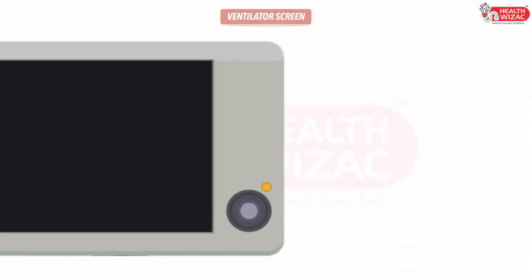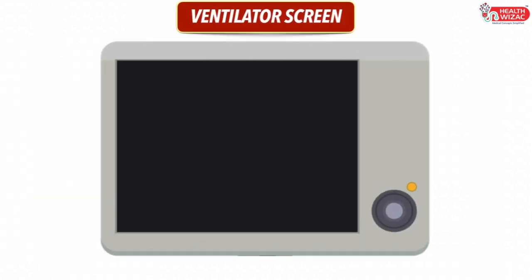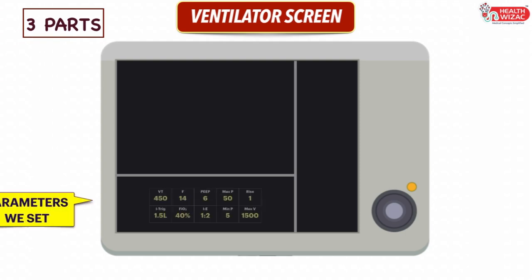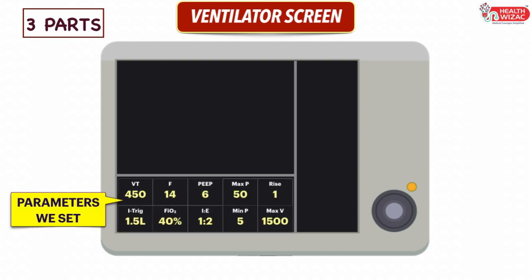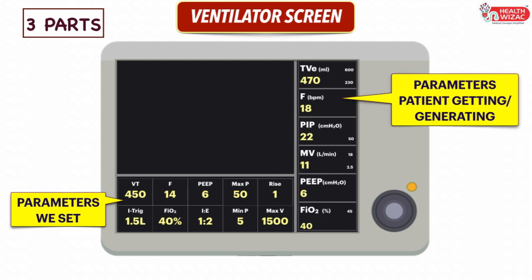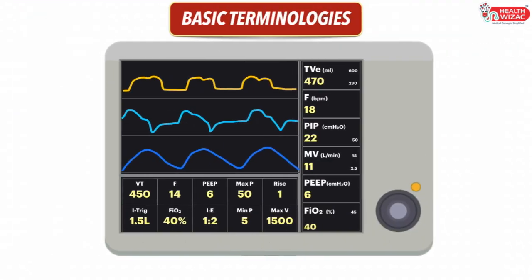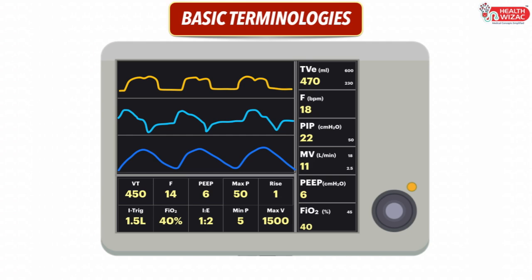Now let's have a look at the screen of the ventilator. The screen usually has three working areas depending upon the values or parameters they reflect. First is the settings area, where we enter the values we decide for the patient. Second is the patient area, where we can see the values generated by the patient or the values the patient is actually getting. Third is the waveform area. Apart from this, the top of the screen shows the active mode of ventilation and any alarms triggered by the ventilator.